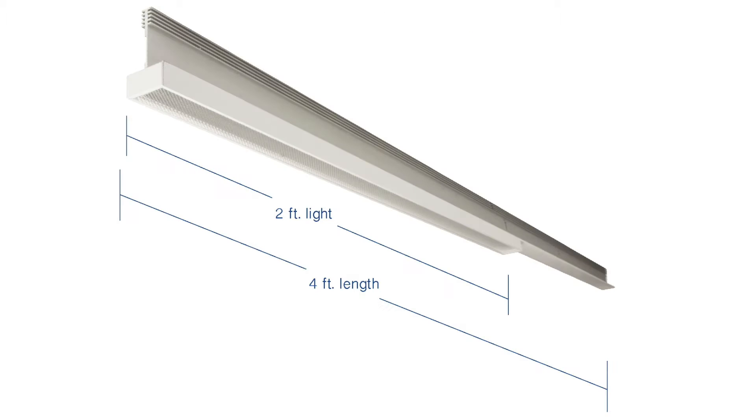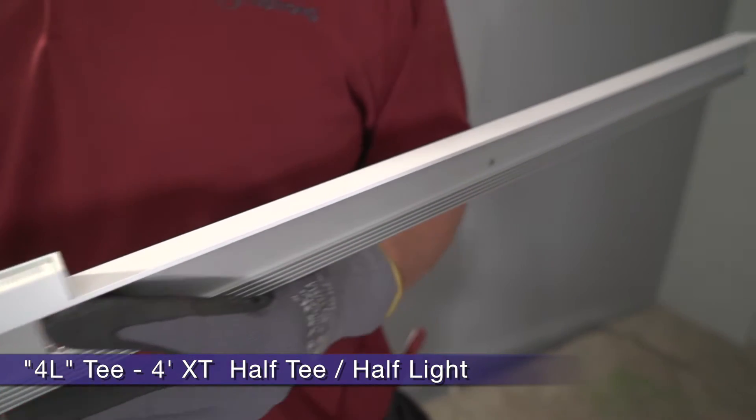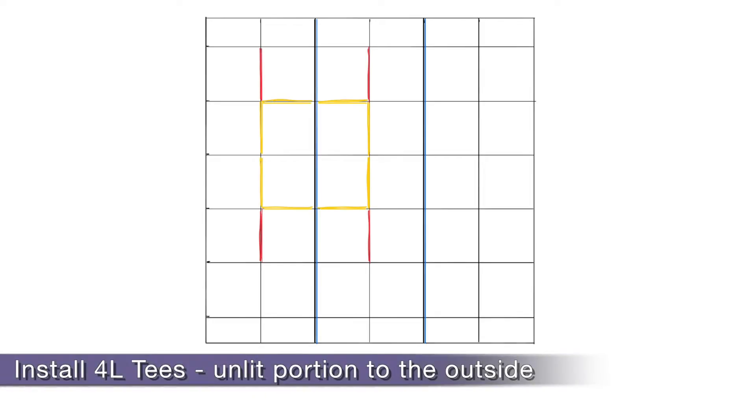In a standard 2x2 grid layout with mains four feet on center, we will use a slightly different four foot LED T-Bar. The 4L model is used anywhere your LED T's take a 90 degree turn. The 4L is half LED and half exposed grid flange.